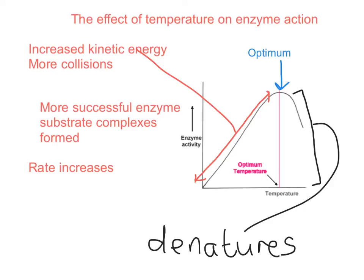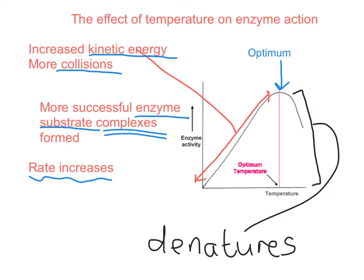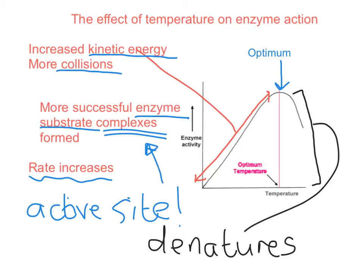In an exam question, check what's being asked: is it asking why rate is increasing, about the whole curve, or just the denaturing part? If it's about why rate of reaction has gone up, you must refer to kinetic energy in your answer. The more kinetic energy, the more collisions there are — link those collisions to collisions between the substrate and the enzyme and the formation of complexes, and link that to the rate of reaction increasing. When talking about anything to do with enzymes, you must always reference the active site.